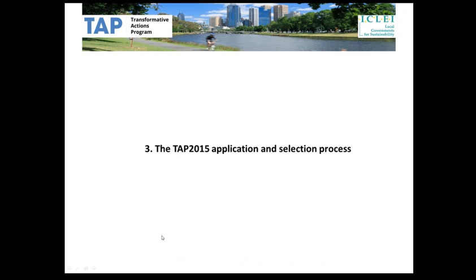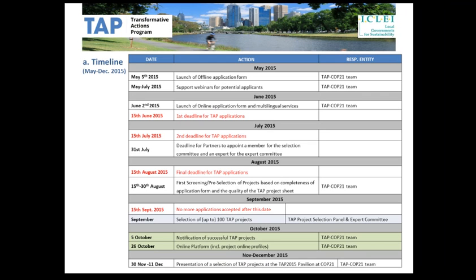Turning to the TAP 2015 application and selection process, here is the timeline. Applications started in May. There are three deadlines: 15th of June, 15th of July, and 15th of August, with no more applications accepted after the 15th of September. Please note that these four deadlines are independent from each other — you can submit one project at whatever deadline, or several projects at different deadlines.